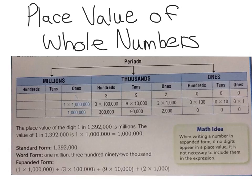Word form is pretty easy. If you know how to read the number correctly, then you know how to write the words. So when I read this number as 1,392,000, all I do is I spell those words out. So if I'm going from standard to word form, all I do is I just say it and then I have the word form for it.